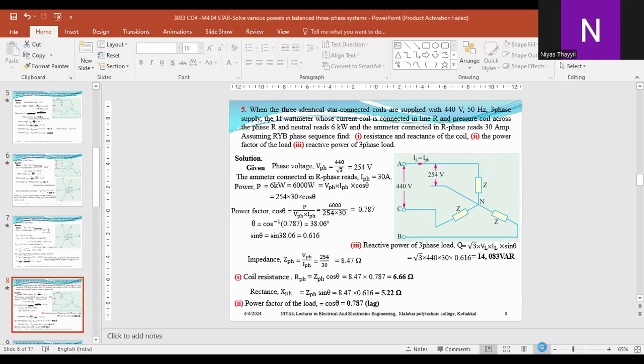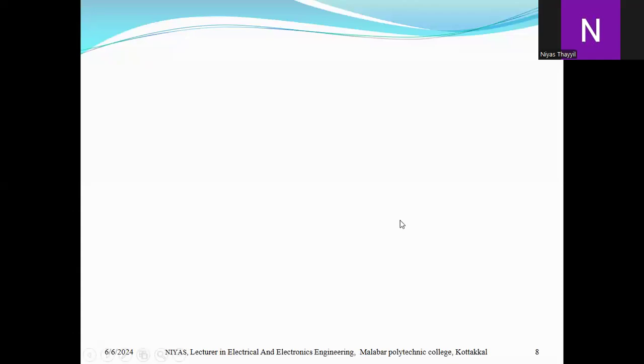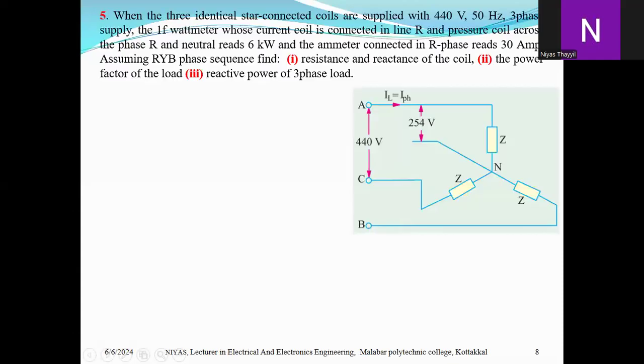For a star-connected system, line voltage is given, so phase voltage equals 440 divided by root 3, which equals 254 volts.